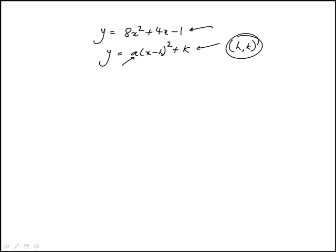What they're asking for is to find the value of k. So we need to complete the square. I'm going to factor an 8 out here, so it's going to become 8 times x squared plus one-half x, and that constant minus 1 remains outside.